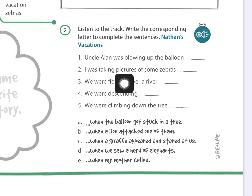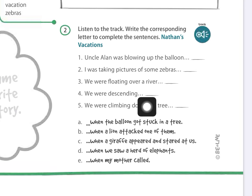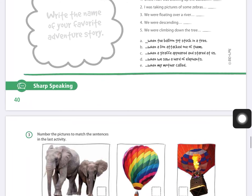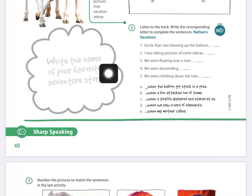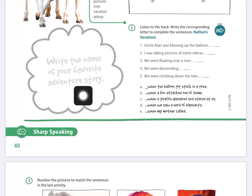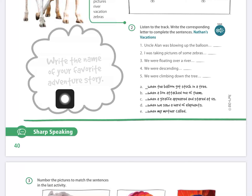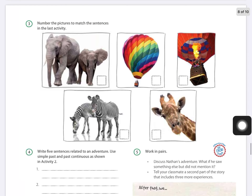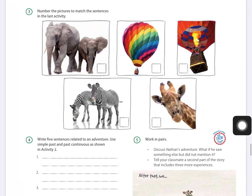The idea is to give me the complete sentence by connecting and linking each letter to the correct line. Also on this page, write the name of your favorite adventure story — just the title, whether it's a book, cartoon, or movie, as long as it presents an adventure story.